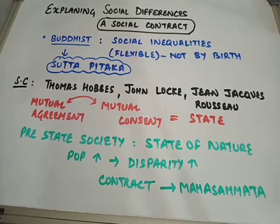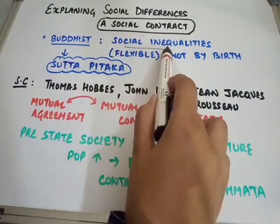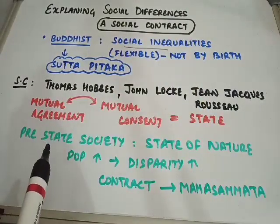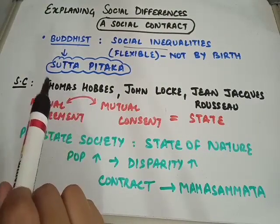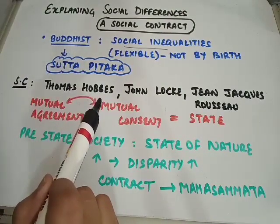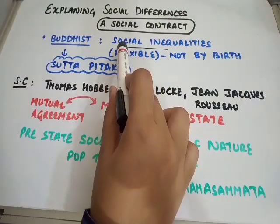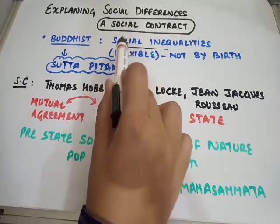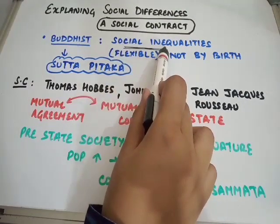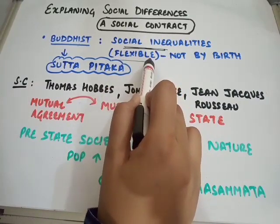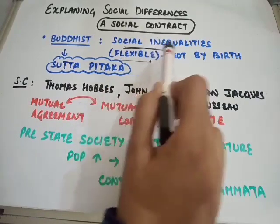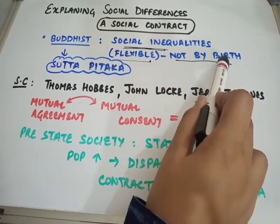I also gave a passing reference to how other traditions emerged which started questioning the caste system. One example was the Buddhist tradition. Buddhists also recognize that there are social inequalities which exist in society. However, one difference is that in Buddhism, these social inequalities are recognized as flexible in nature.